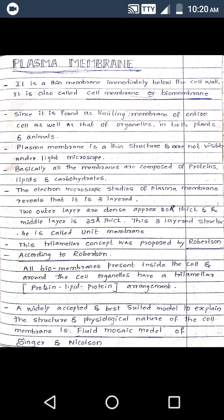In detail, plasma membrane is a thin membrane immediately below the cell wall. It is also called cell membrane or biomembrane. Plasma membrane is a limiting membrane of the entire cell as well as that of the organelles — it acts as a boundary to the cell and to the cell organelles. Due to its thin structure, plasma membrane cannot be observed under the light microscope.